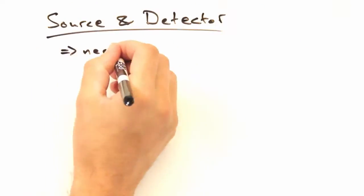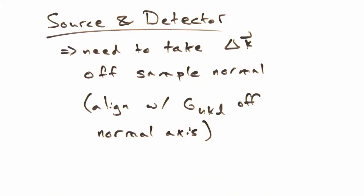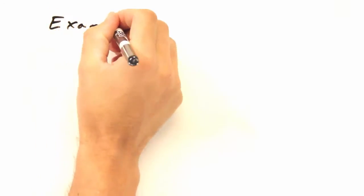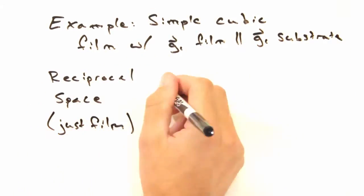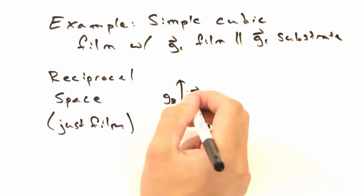We want to set up our source and detector to form a delta K that aligns with a G vector at a particular HKL. As an example, consider a film made of a simple cubic structure, and for the moment, let's look at a cell that has a particular in-plane alignment.